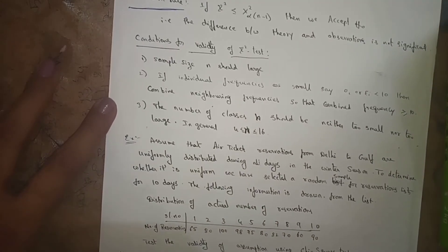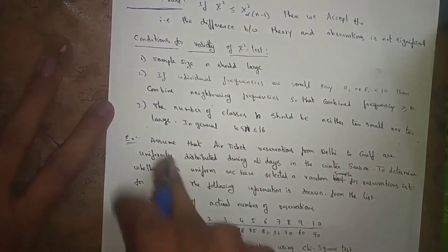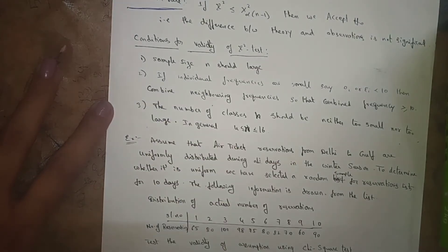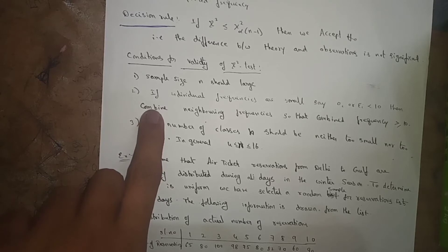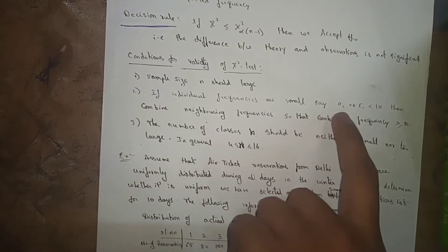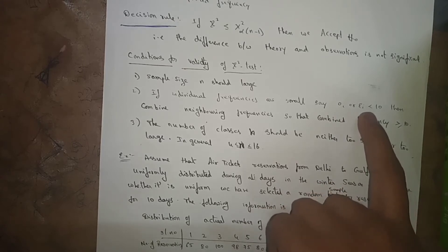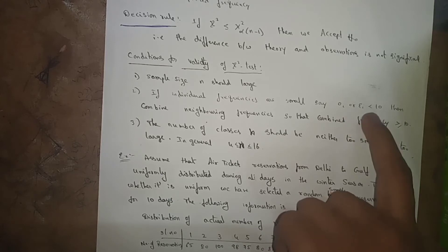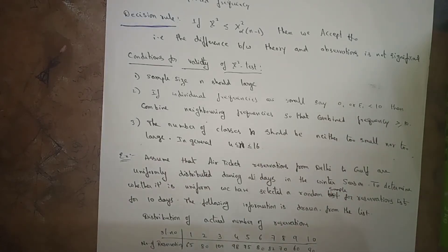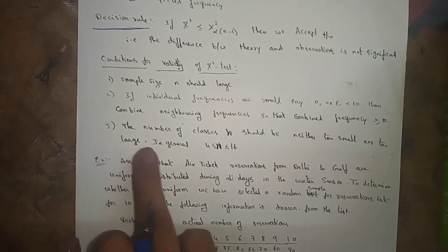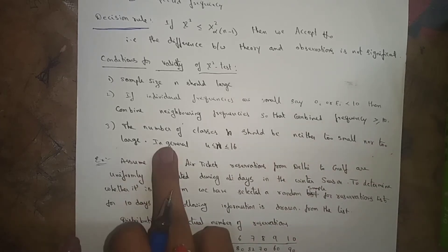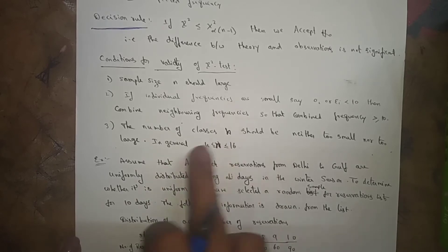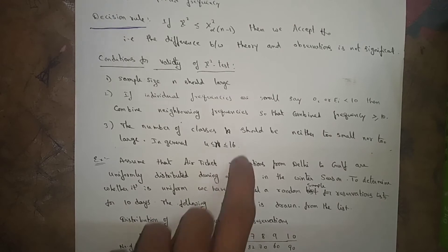Conditions for validity of chi-square test: First, the sample size n should be large. Second, if individual frequencies are small — say less than 10 — then combine neighboring frequencies so that the combined frequency is greater than or equal to 10. Third, the number of classes n should be neither too small nor too large; in general n should lie between 4 and 16.